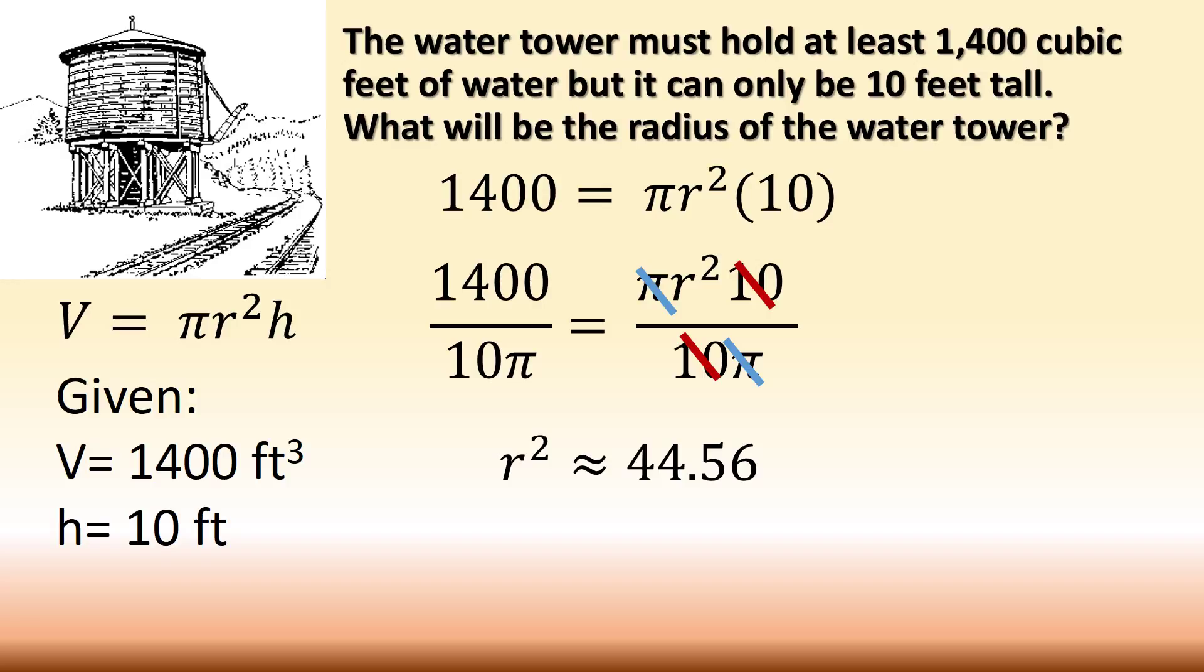Now, I want r. I don't want r squared. How am I going to unsquare r, my radius? Well, you're right. Take the square root. When I take the square root of r squared, I get r. When I take the square root of 44.56, my answer is going to be that the radius will be approximately 6.68.